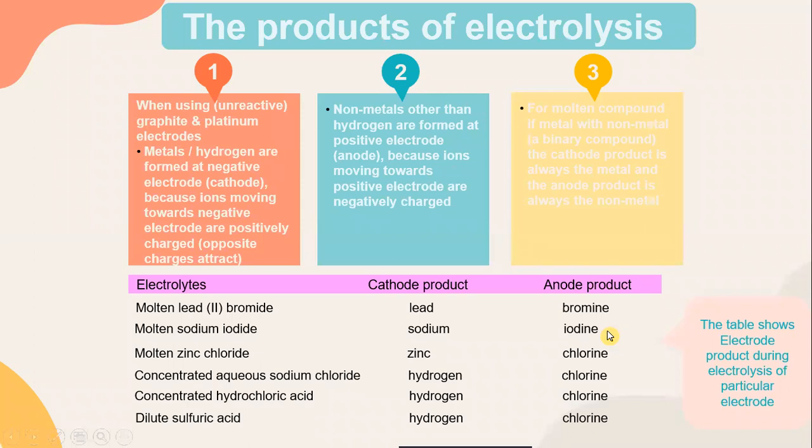The products of electrolysis: when using unreactive graphite or platinum electrodes, metals and hydrogen are formed at the negative electrode (cathode), because ions moving to the negative electrode are positively charged. Non-metals other than hydrogen are formed at the positive electrode (anode), because ions moving to the positive electrode are negatively charged. For molten compounds of metal with non-metal — a binary compound — the cathode product is always the metal and the anode product is always the non-metal.